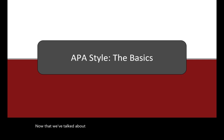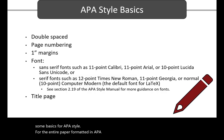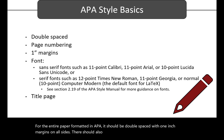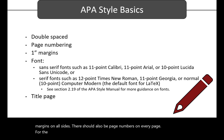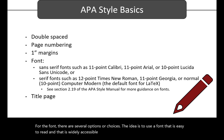Now that we've talked about direct quotes, paraphrasing, and summarizing, let's look at some basics for APA style. For the entire paper formatted in APA, it should be double-spaced with one-inch margins on all sides. There should also be page numbers on every page. For the font, there are several options or choices. The idea is to use a font that is easy to read and that is widely accessible on a variety of platforms — think something like a PC, a Mac, an iPad, an Android tablet, and a mobile device can all read and access the font.